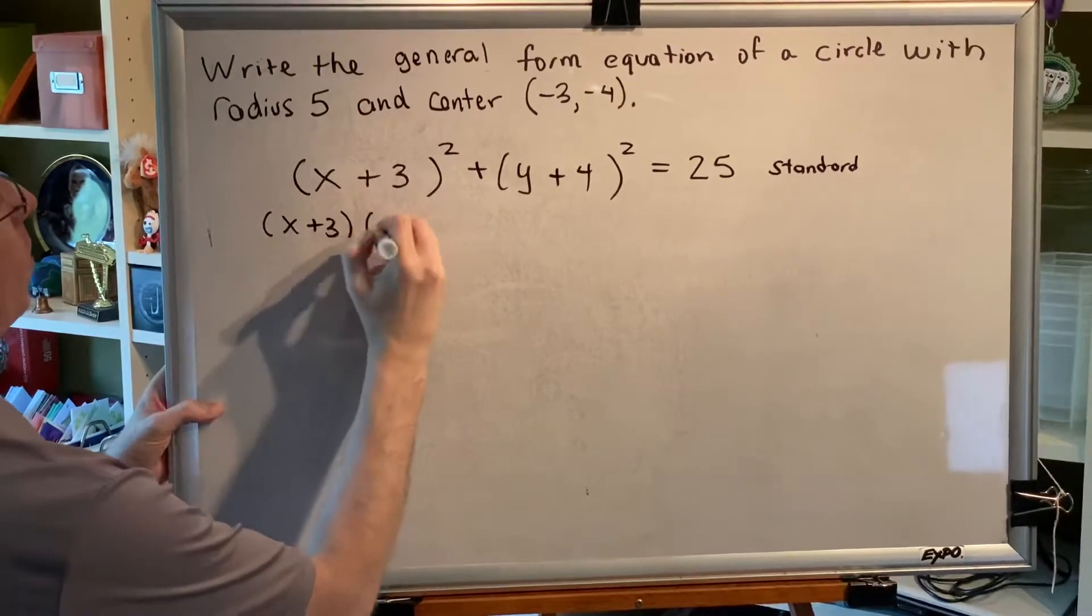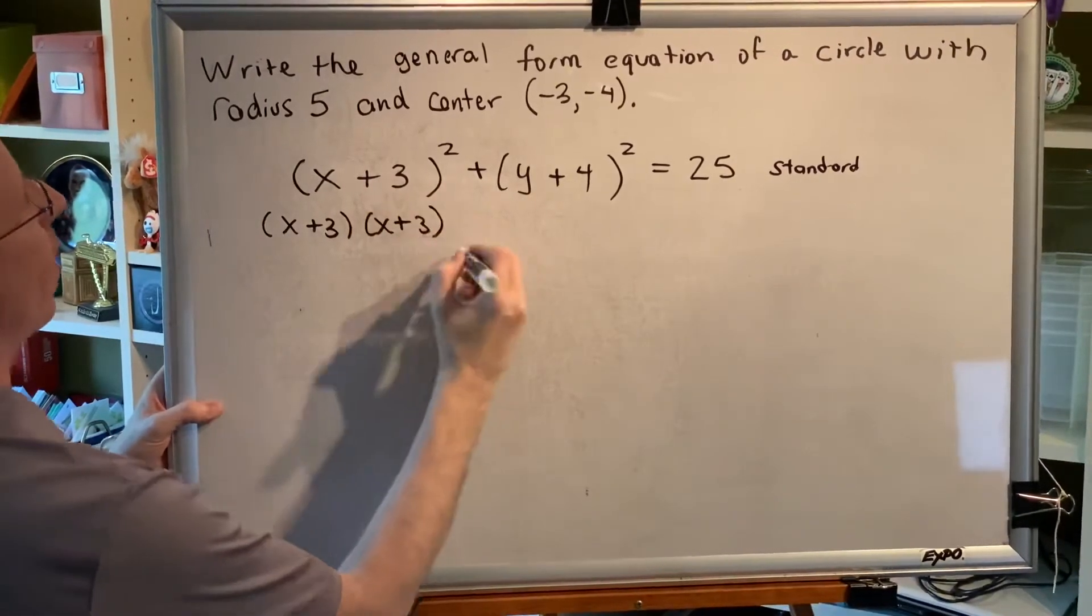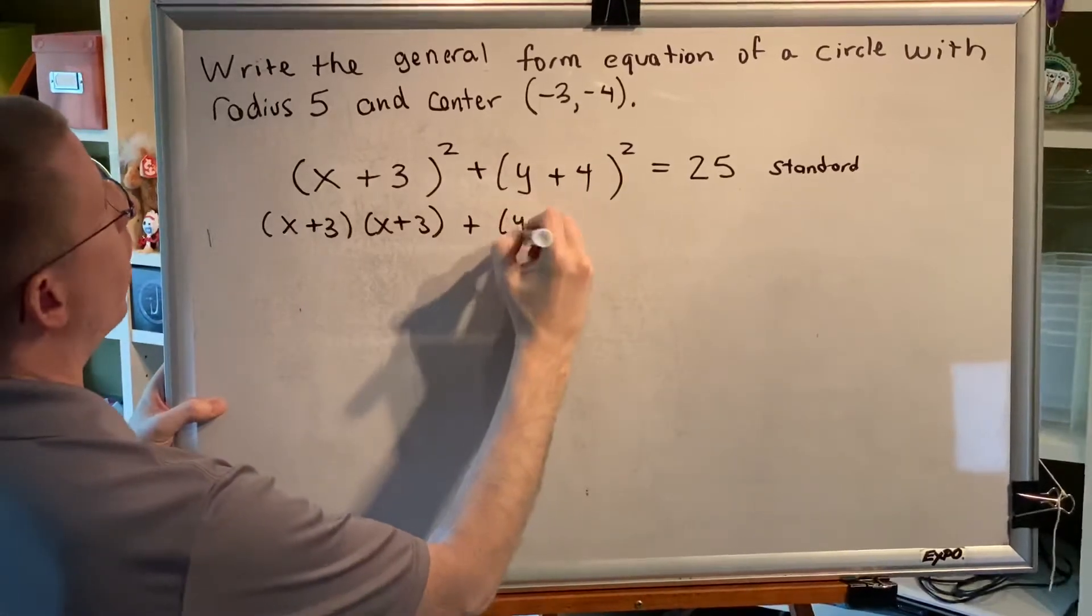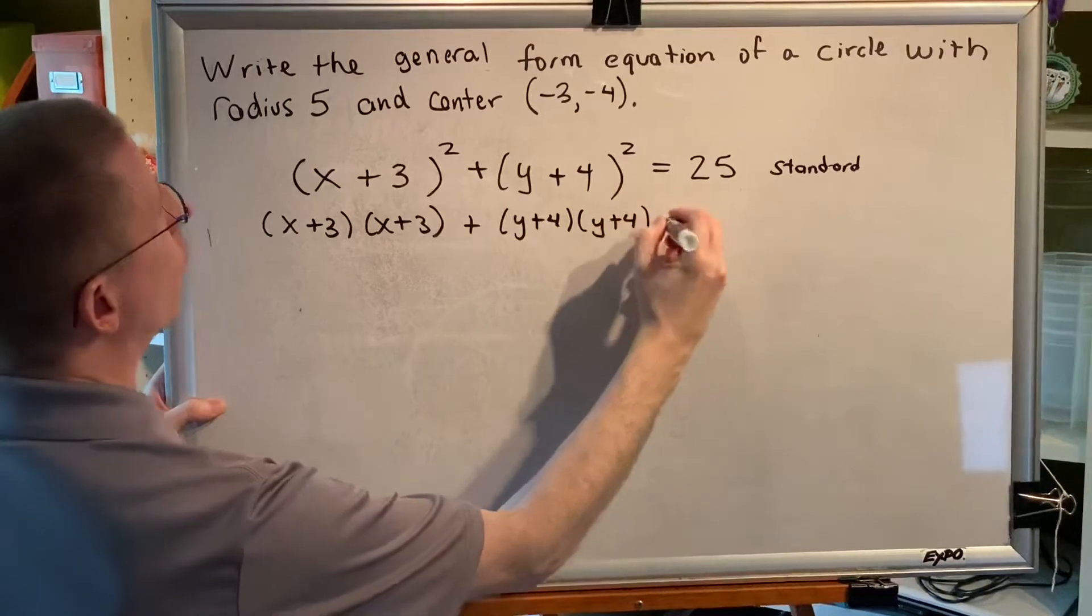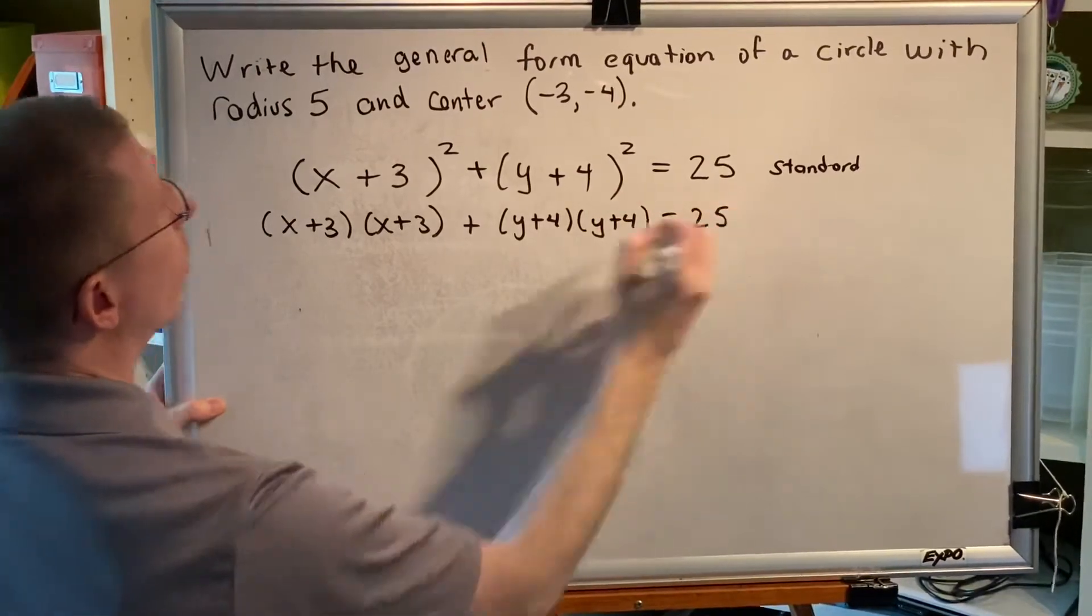So (x + 3) squared would be written as (x + 3) and another (x + 3). (y + 4) squared would be written as (y + 4) and another (y + 4). We'll leave the 25 where it is for now.